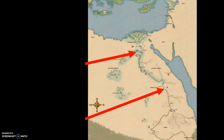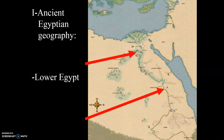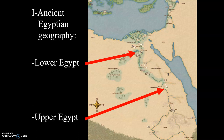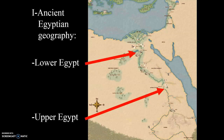Here we can see a map of the Nile River Delta. Lower Egypt is in the north and Upper Egypt is in the south, mainly due to the flow of the river. The river originates in the south and flows north into the Nile River Delta. This is why it seems upside down — Upper Egypt is in the south and Lower Egypt in the north because of the flow and direction of the river.